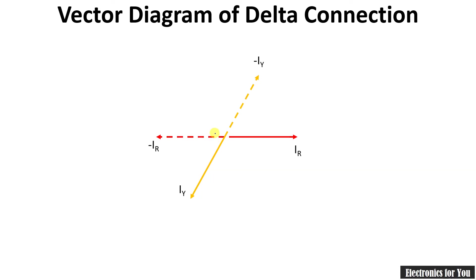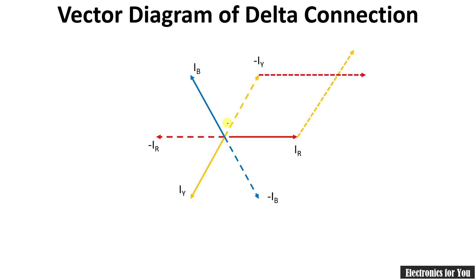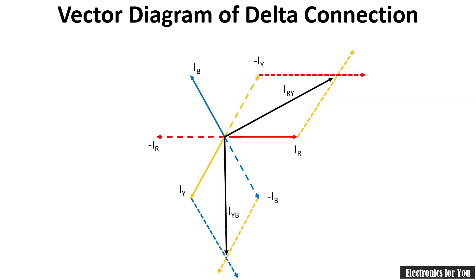Continuing the phasor diagram: 120 degrees apart we get the third phase current IB and its negative minus IB. To find the resultant line current, we draw parallel lines — one parallel to IY and one parallel to IR. Their intersection gives the line current IRY. Similarly, we obtain IYB and IBR. We will use this diagram to calculate the relationship between phase current and line current.